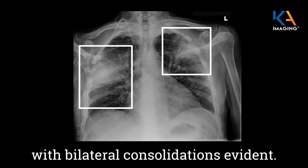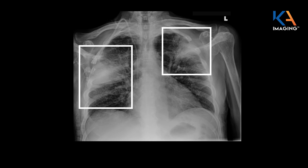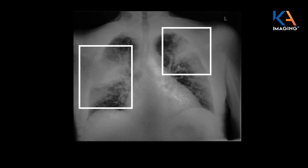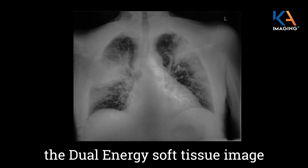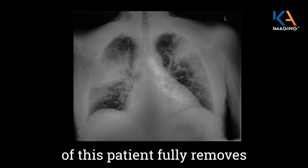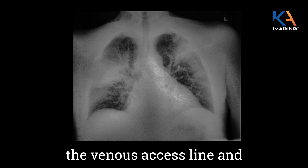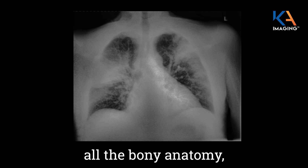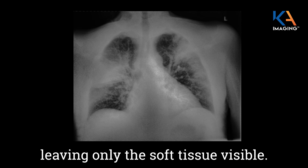With bilateral consolidations evident, the dual energy soft tissue image of this patient fully removes the venous access line and all the bony anatomy, leaving only the soft tissue visible.